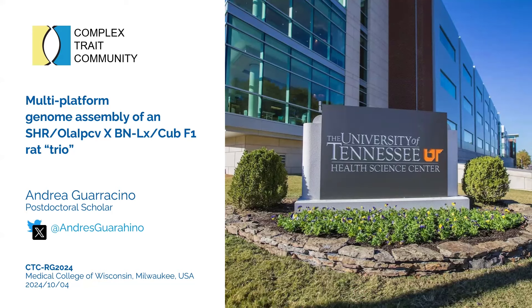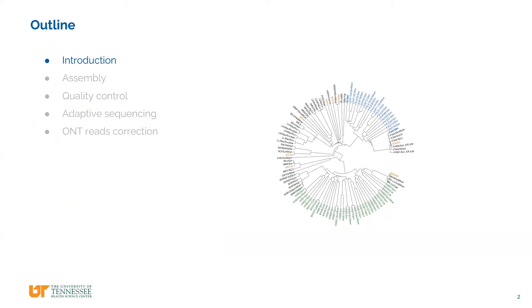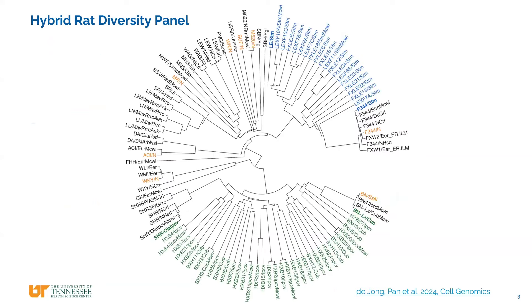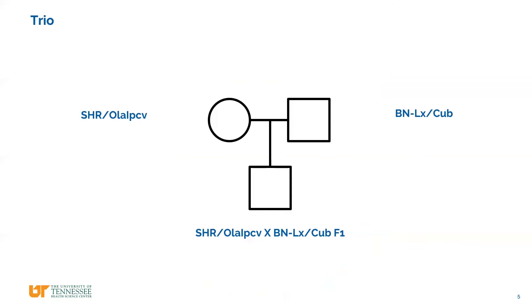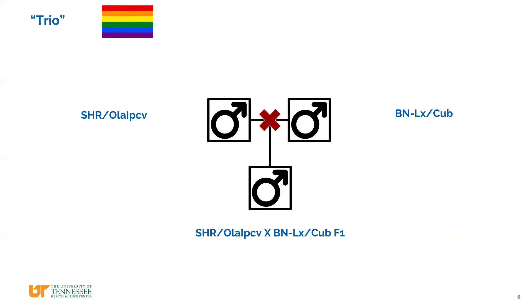Today I'll present how we are working with multiple sequencing technologies to assemble rat genomes. We start from the hybrid rat diversity panel, focusing on two samples that have one corresponding F1 sample — forming a trio. In reality, what we have are just three male rats, so this might be an approximation of the trio for the autosomes but not for the sex chromosomes.